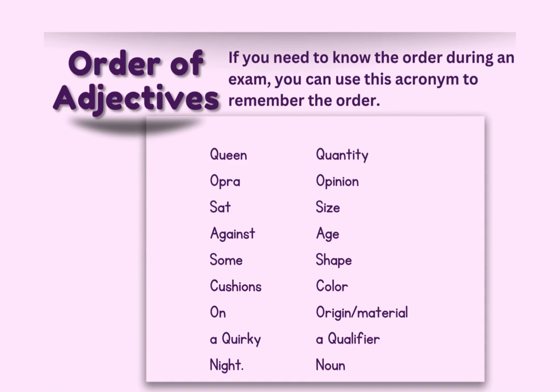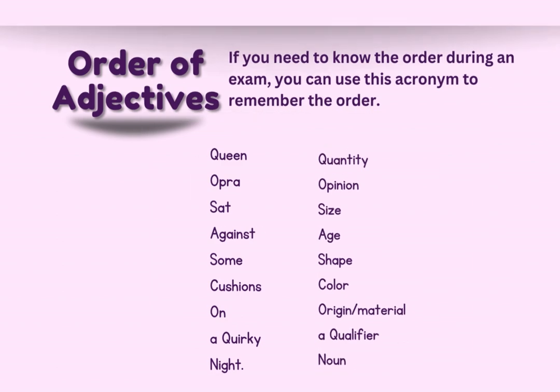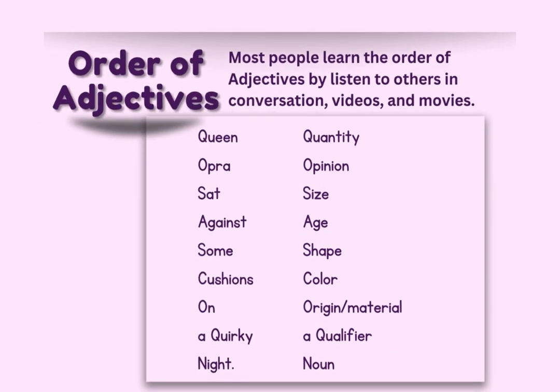I asked my non-native English-speaking husband how he would describe a jar that I held up. He said, 'It's a small, square, clear, glass jar.' I explained this lesson to him, but then I asked how he learned the order of adjectives, since he got the order correct. He said, 'I just listened to others and watched a lot of English movies.' As a native English speaker, I too listened to others and watched TV to learn the order of adjectives as a child. It's the easiest way, but it's also good to know the order in the acronym so you can check yourself when writing.